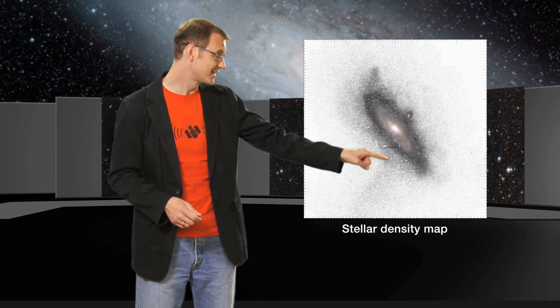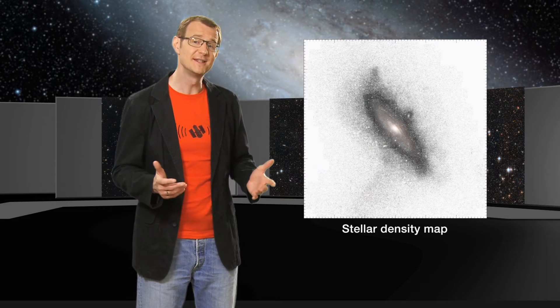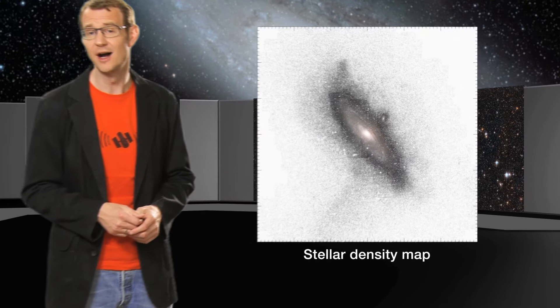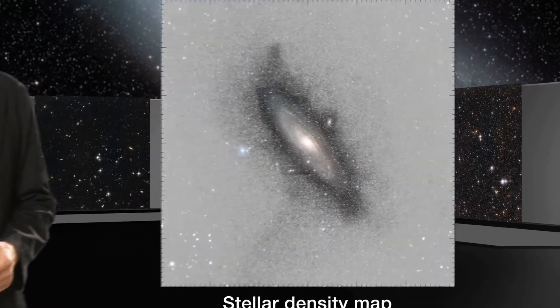This giant stellar stream is noticeably denser than the rest of the halo. This swathe of stars was left behind by a dwarf galaxy that was swallowed by Andromeda.